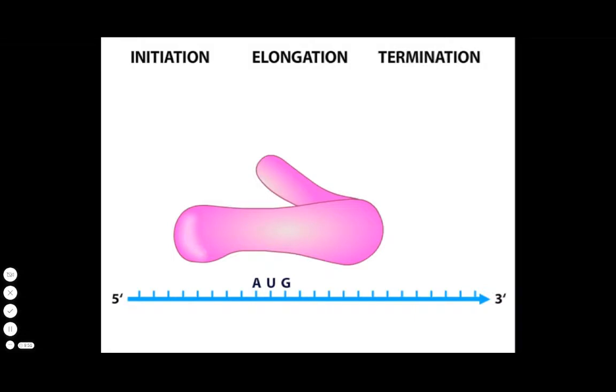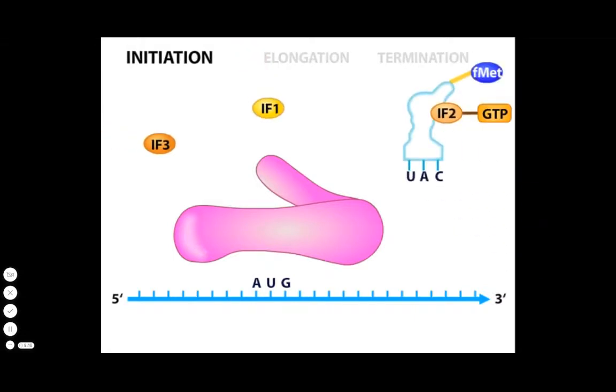In bacteria such as E. coli, initiation requires three small proteins called initiation factors, IF1, IF2, and IF3, as well as the first tRNA, the mRNA, and the small ribosomal subunit, also called the 30S subunit.